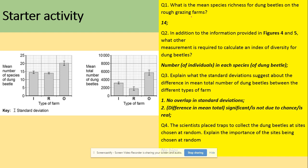So in our first question, what is the mean species richness? We're looking at this and we've got 14, so we're reading that information off the graph. In addition, what else is needed? It's a number of individuals in each species. If you refer to the equation of the index of diversity, we need N which is a total number and we also got a little n in the equation which is a number of individuals in each. So that's missing.